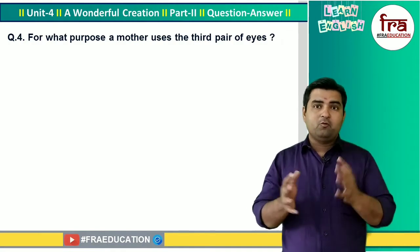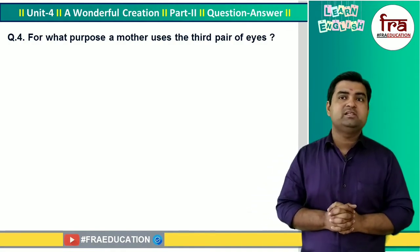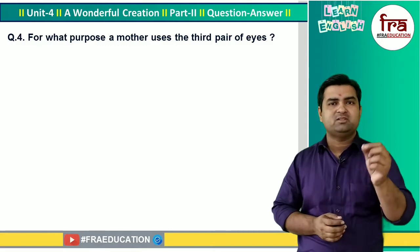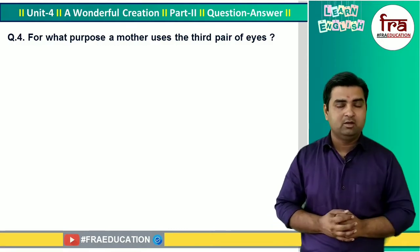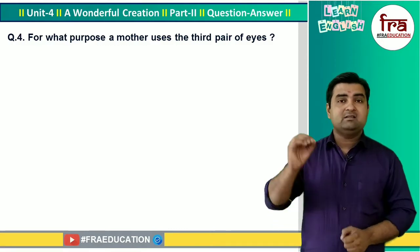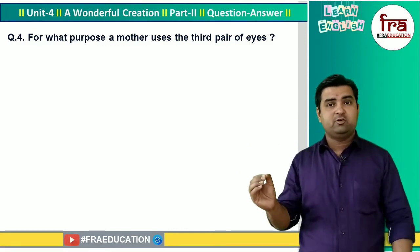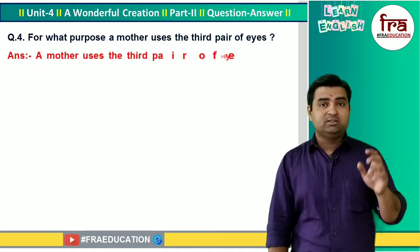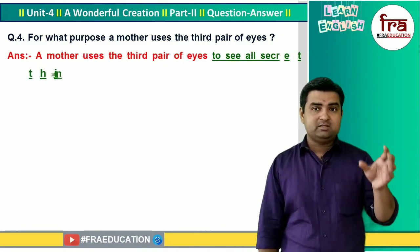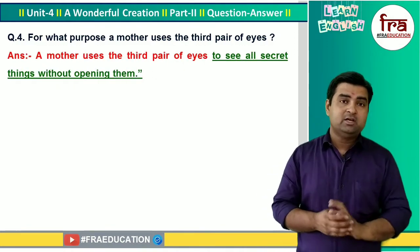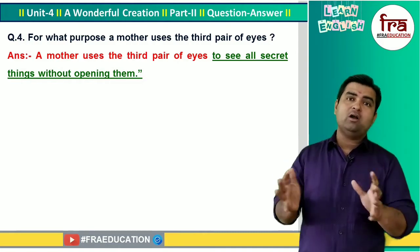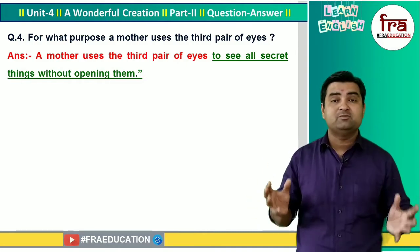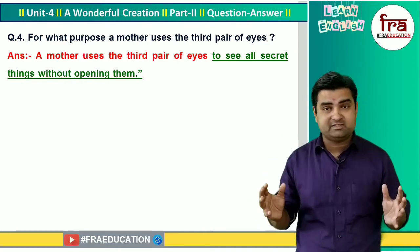For what purpose does a mother use the third pair of eyes? Purpose means aim or objective. Mother uses the third pair of eyes to see all secret things without opposition.